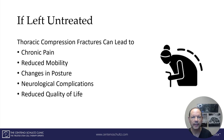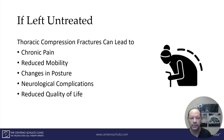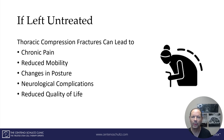If left untreated, a thoracic compression fracture can be a significant source of disability. It can certainly be a source of chronic pain, reduced mobility, and postural changes. We see these patients sometimes in the store or in the park — they're hunched forward, otherwise known as kyphosis. There can also be neurologic symptoms depending upon the severity of the compression fracture and whether there's irritation of the spinal cord or exiting nerves. Most importantly, quality of life can be compromised if a thoracic compression fracture is not addressed.